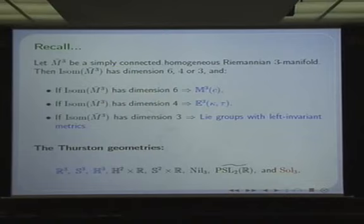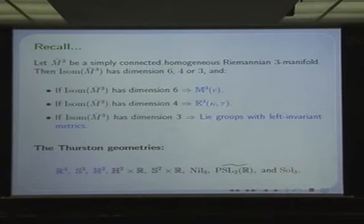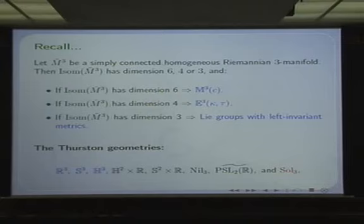The first three Thurston geometries are the three canonical model spaces. Afterwards you have four of the E(κ,τ) elements: H²×ℝ, Heisenberg space, S²×ℝ, and the universal covering of PSL(2,ℝ). Berger spheres are missing because their isometry group is not maximal — it is contained in the isometry group of the three-dimensional sphere. Finally, for the case of dimension three, among all the Lie groups with left-invariant metrics, you have one special one: the group Sol₃.